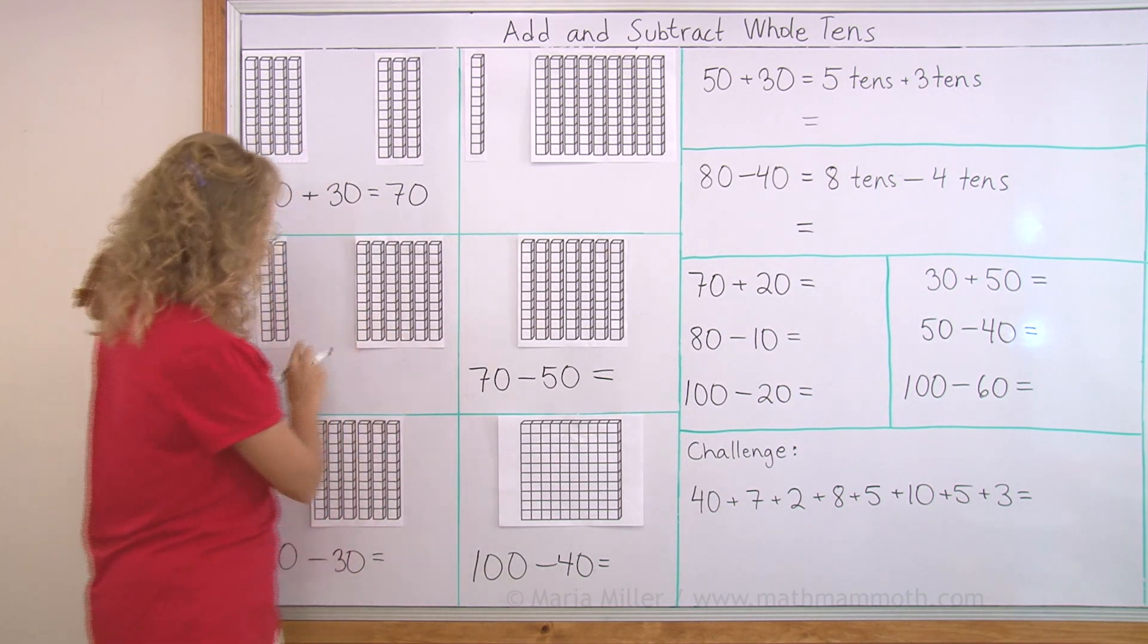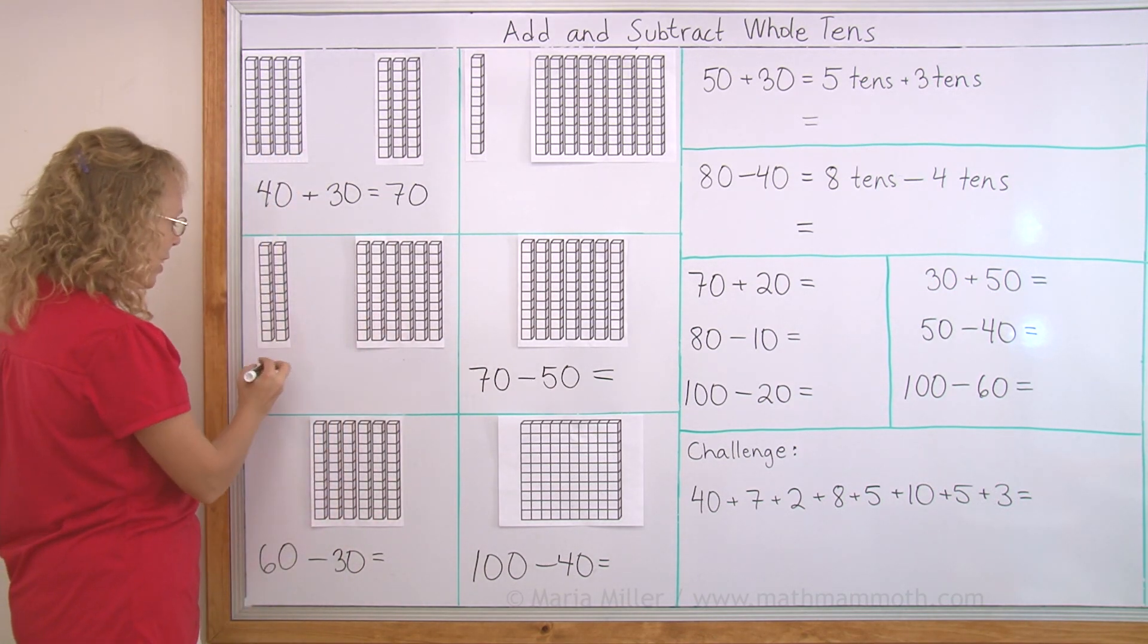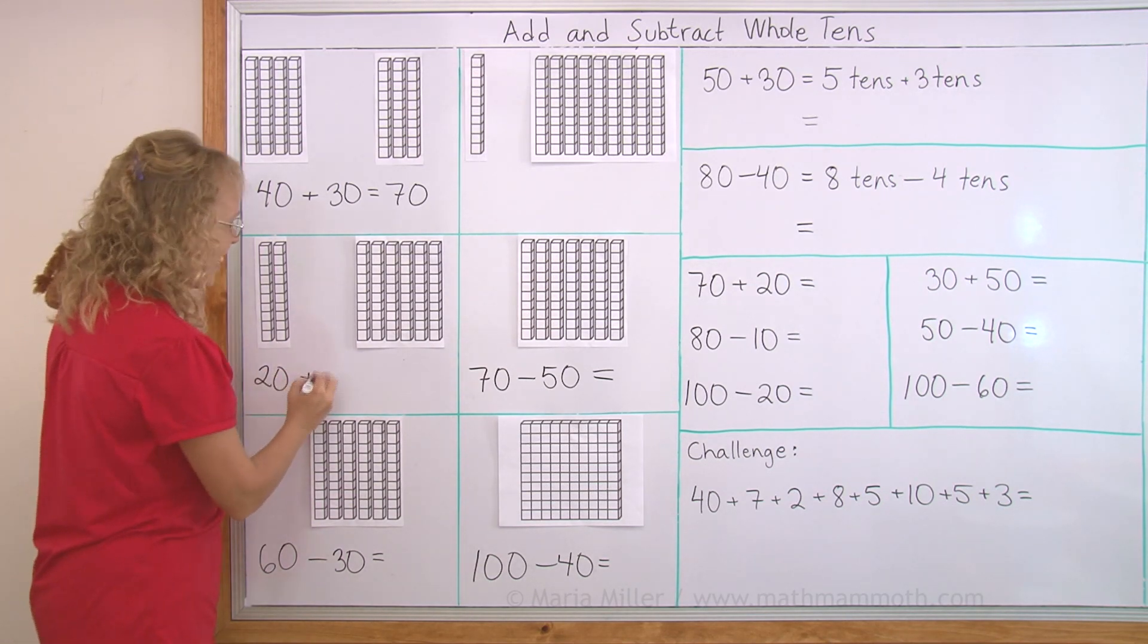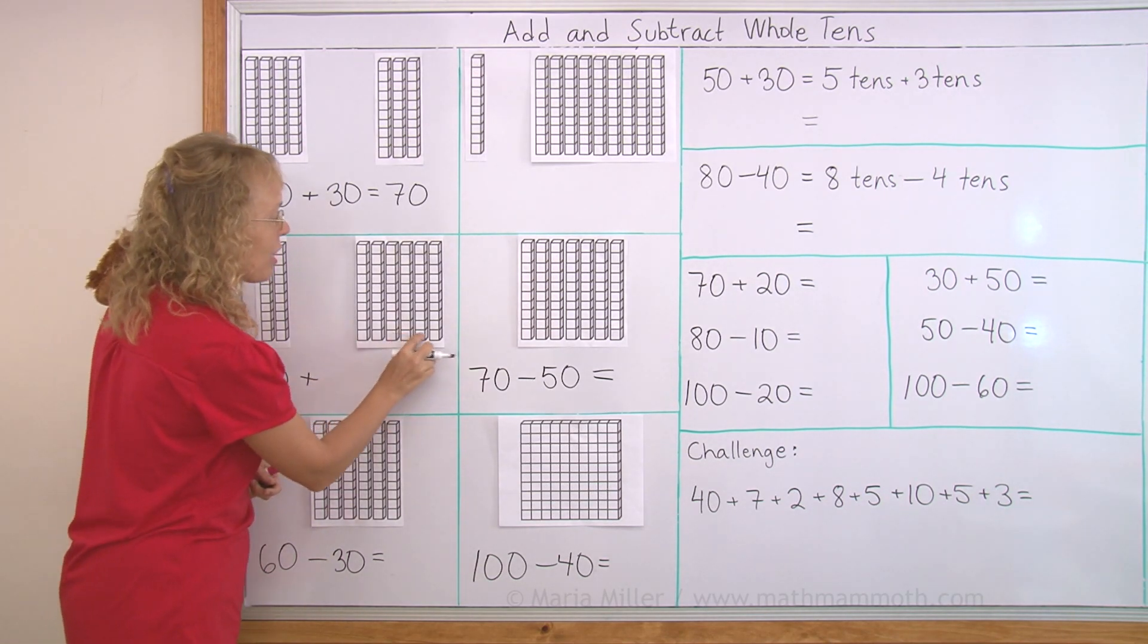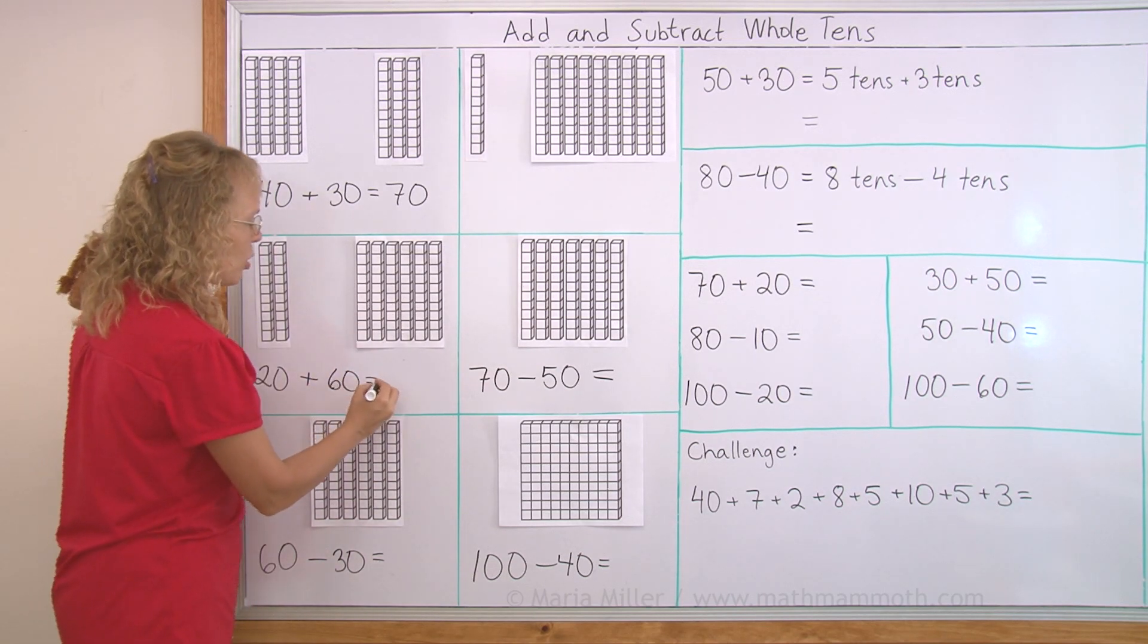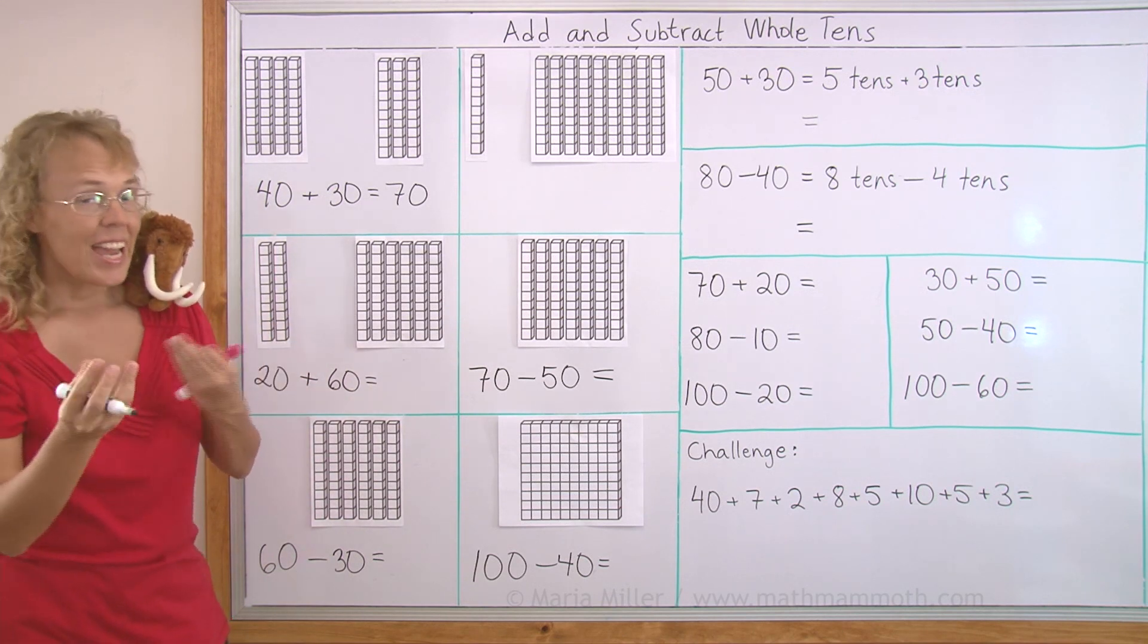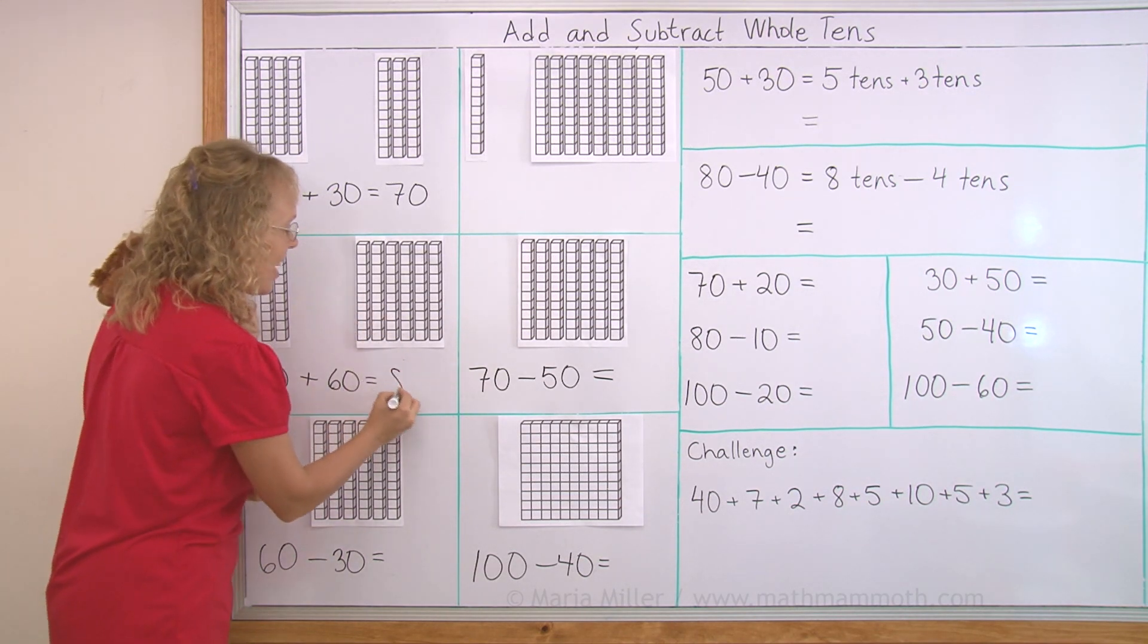Let's try another one over here. This one, two tens is two and zero, 20. And then one, two, three, four, five, six tens is 60. And so what do we get when we add? We get eight tens, 80.